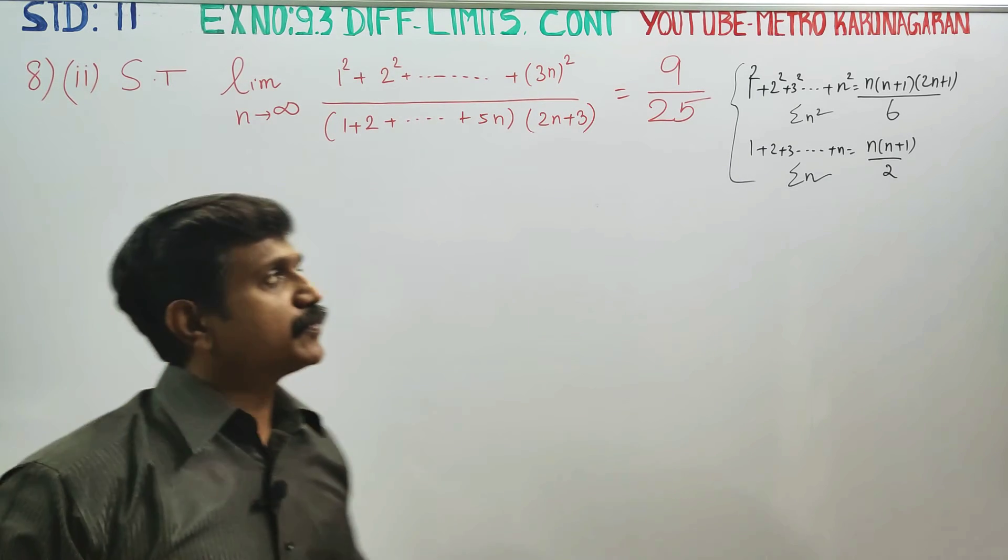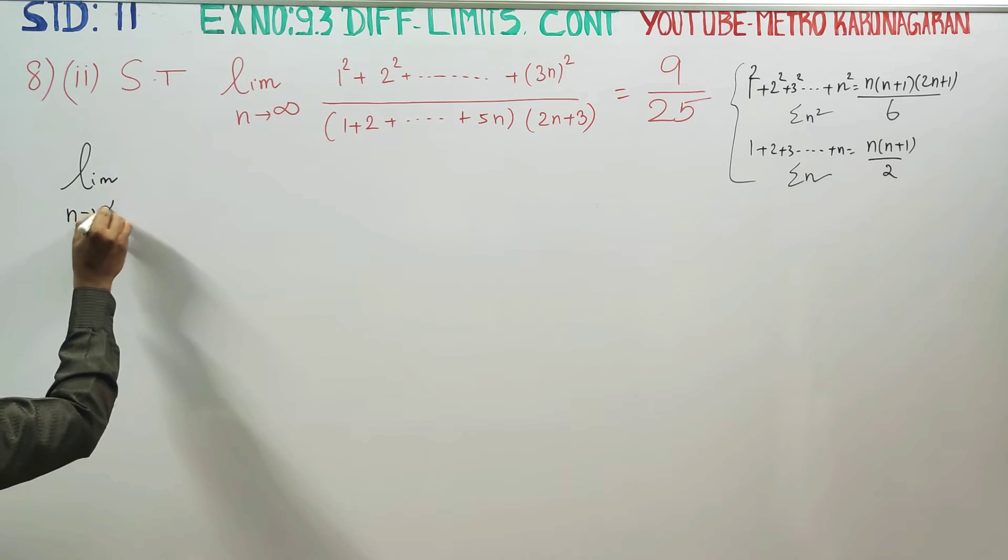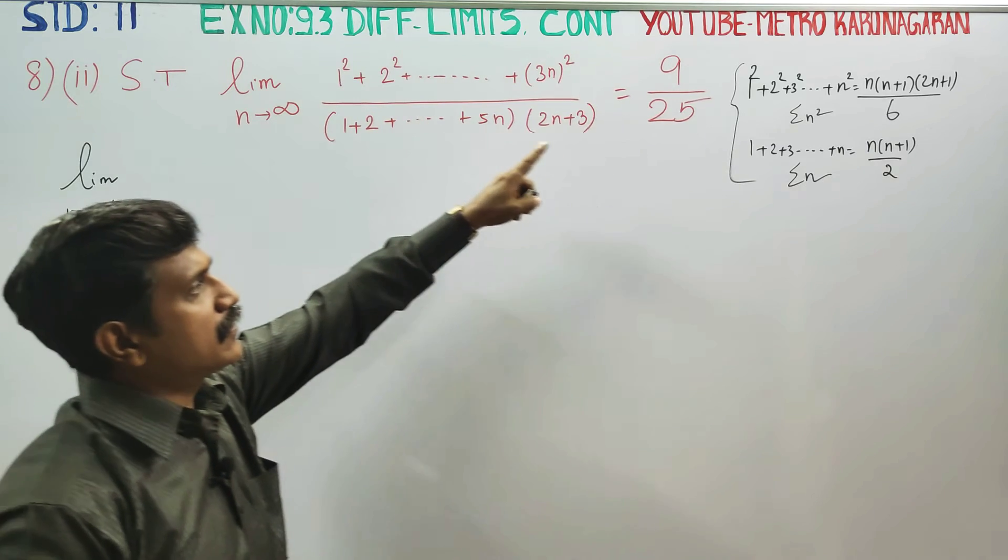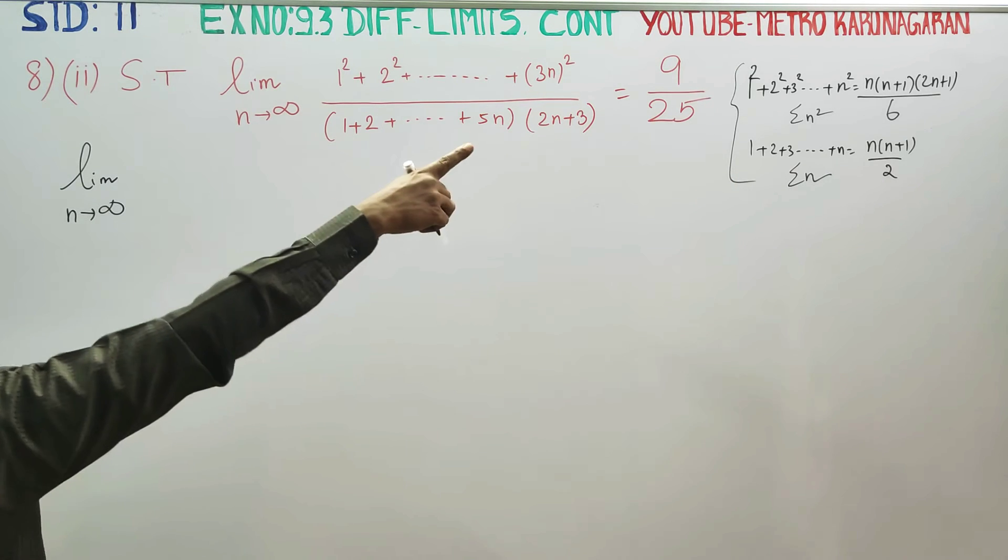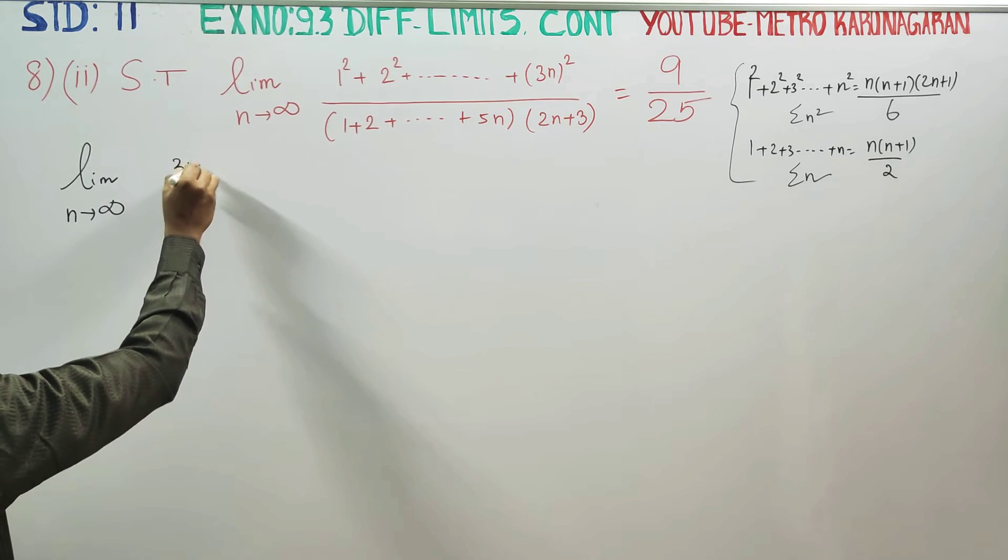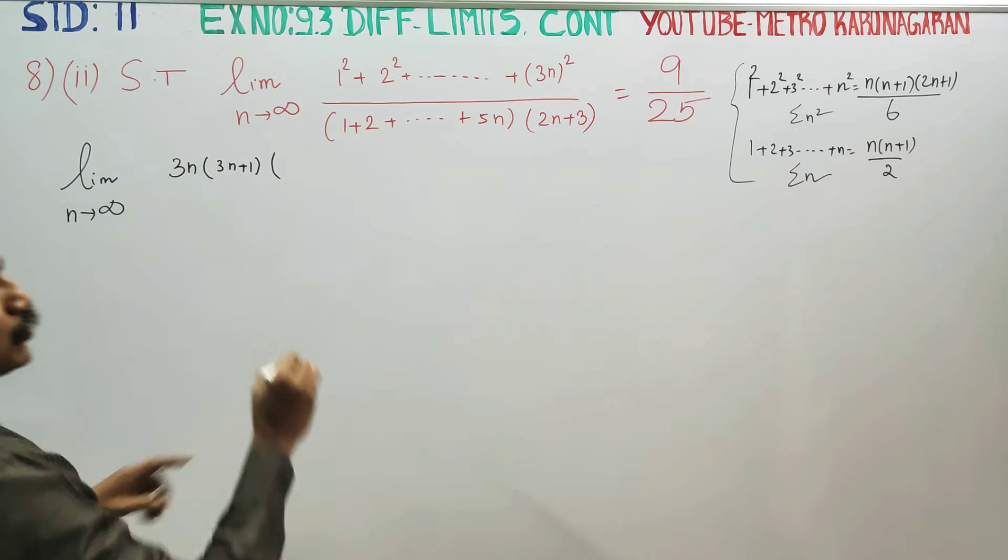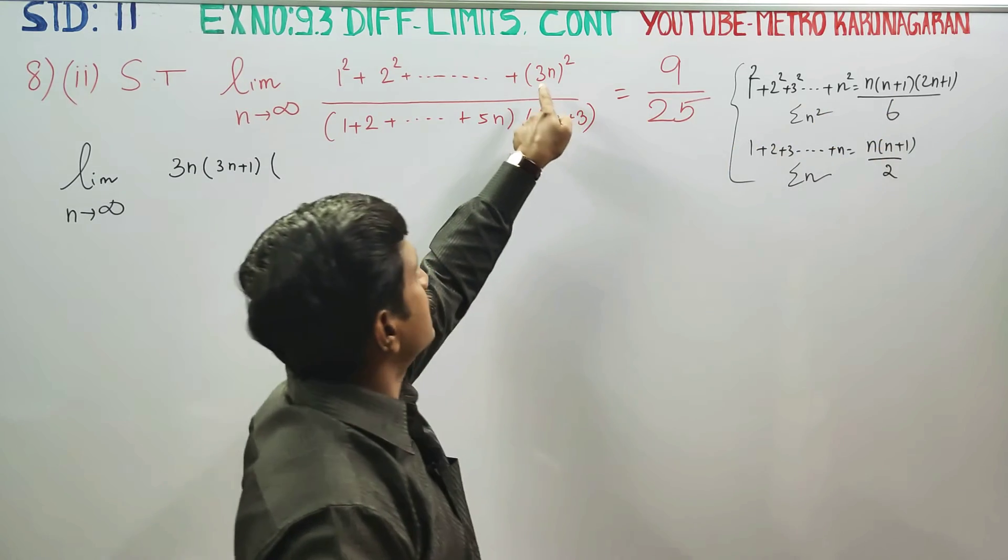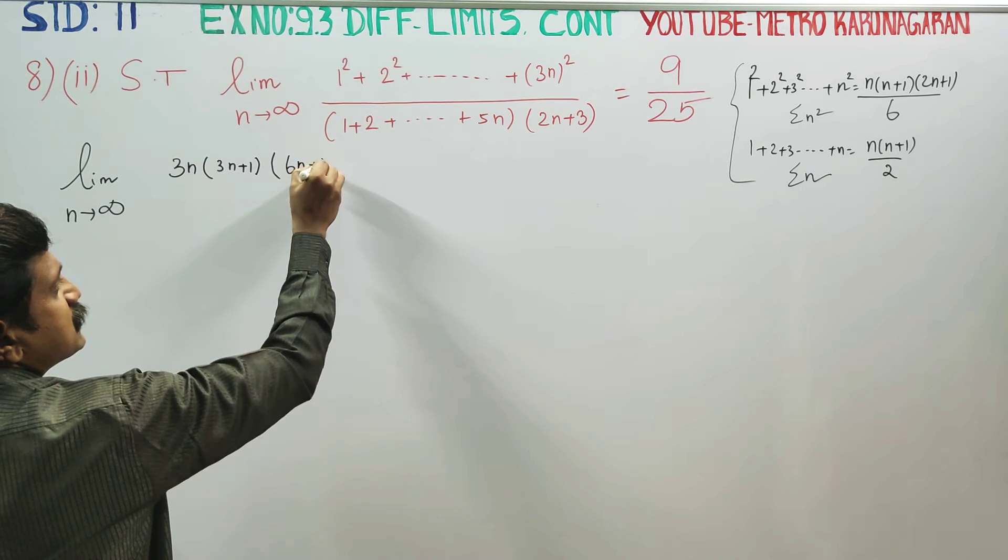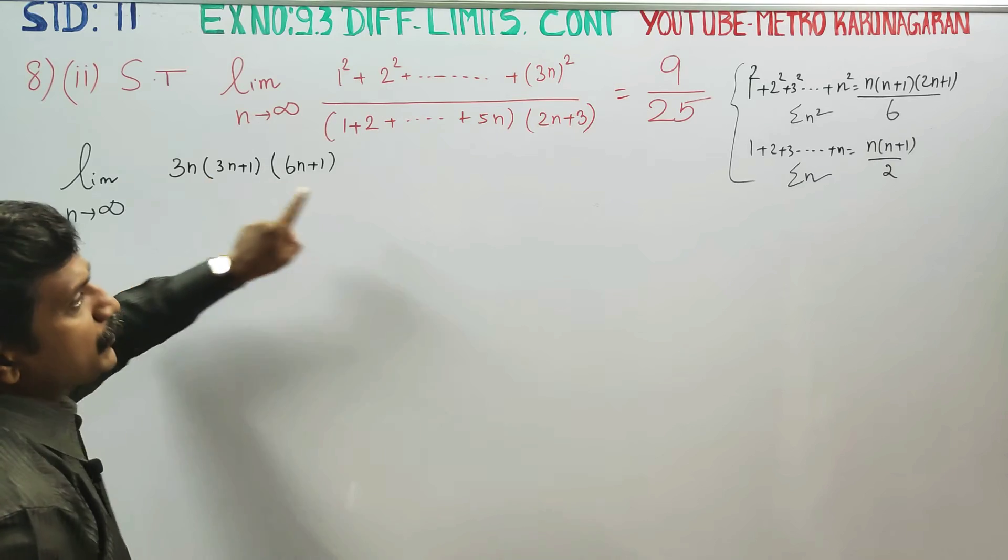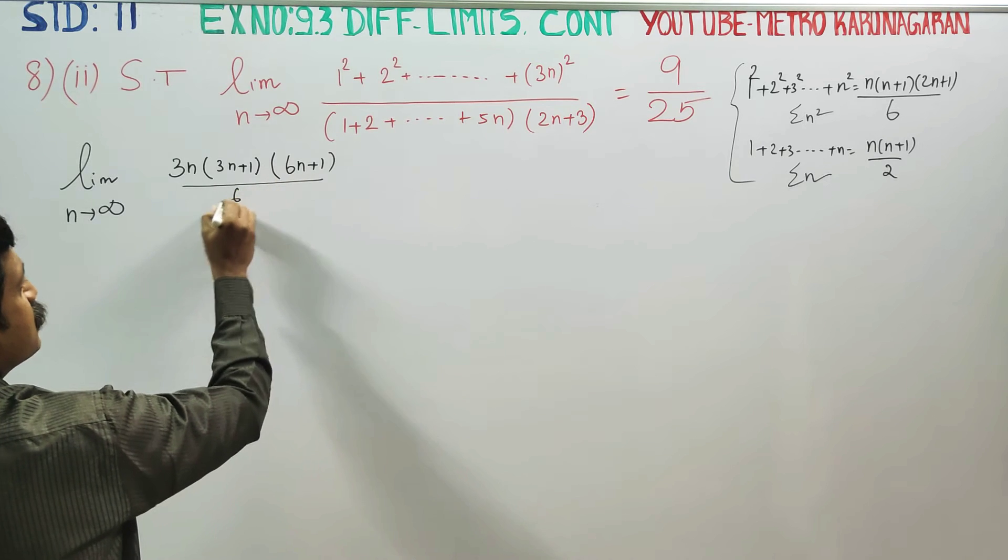We will start with simplifying the numerator. As n turns to infinity, for 1² + 2² + ... + (3n)², you have to just substitute 3n into the formula. I am just substituting 3n: 3n(3n+1)(2×3n+1)/6. Here n is 3n, so 2 into n is 6n plus 1. Here n is 3n substitute, all divided by 6. Numerator is over.